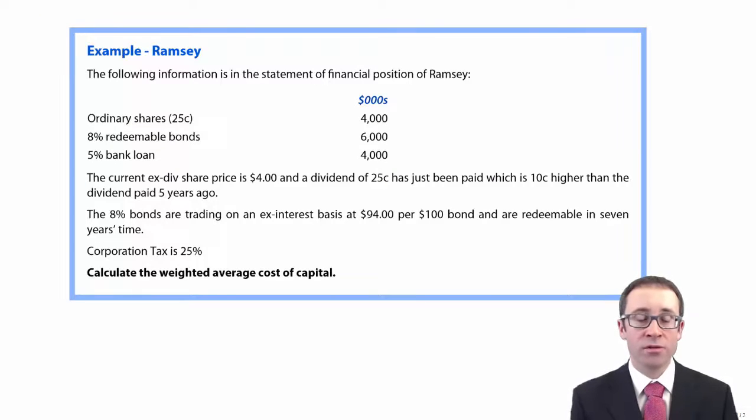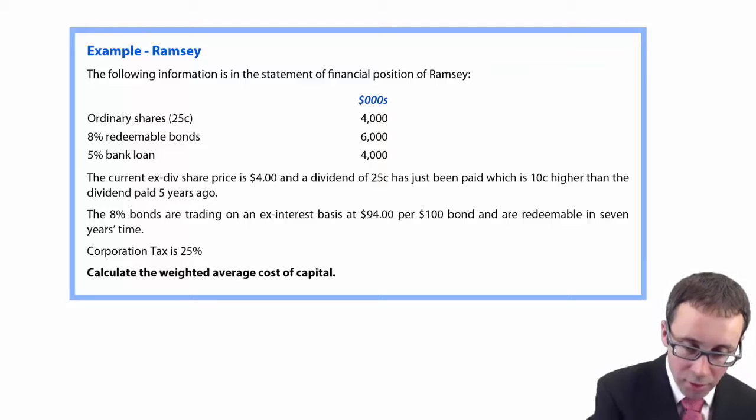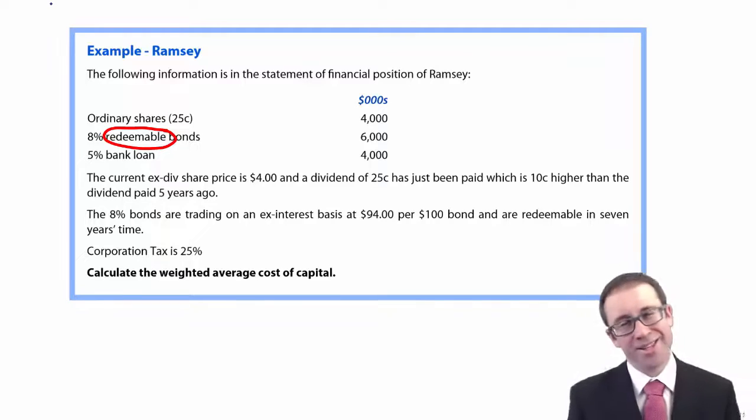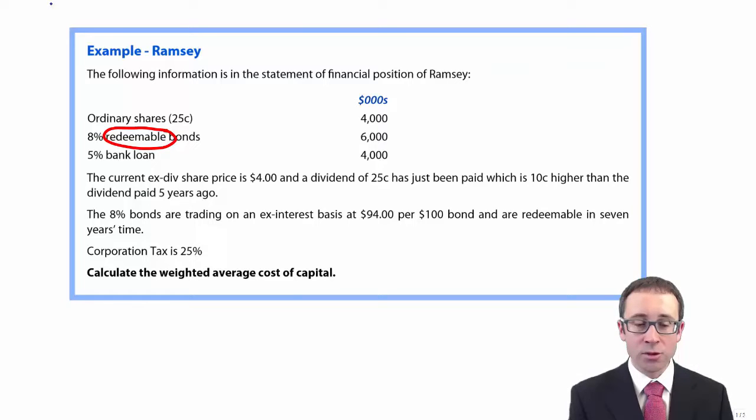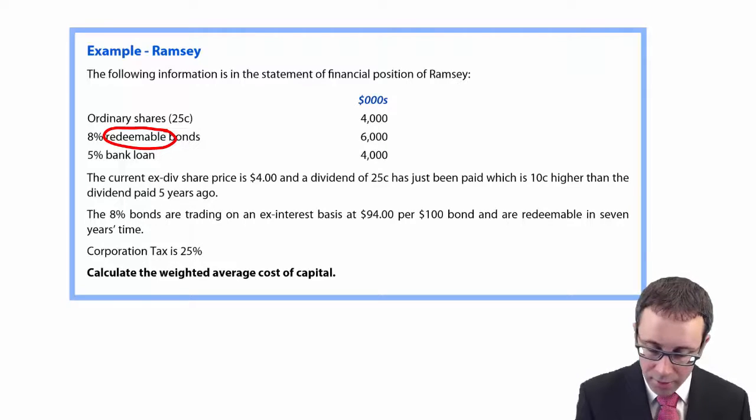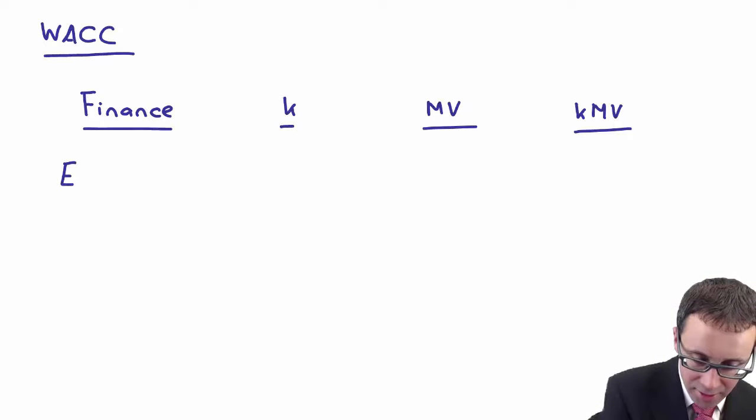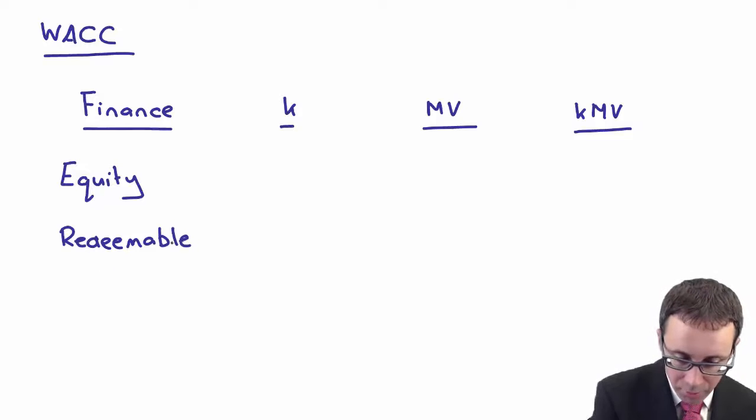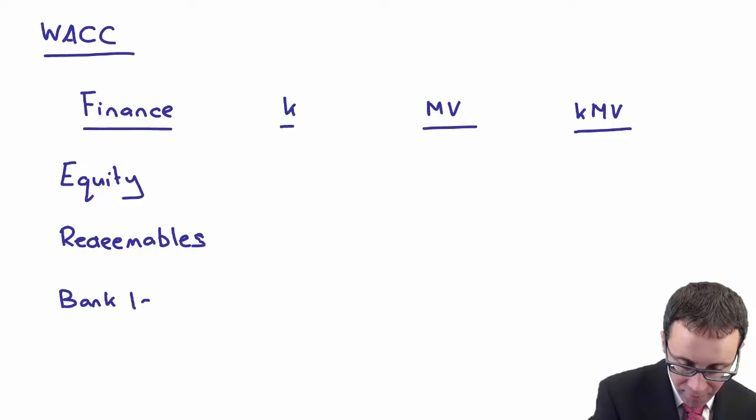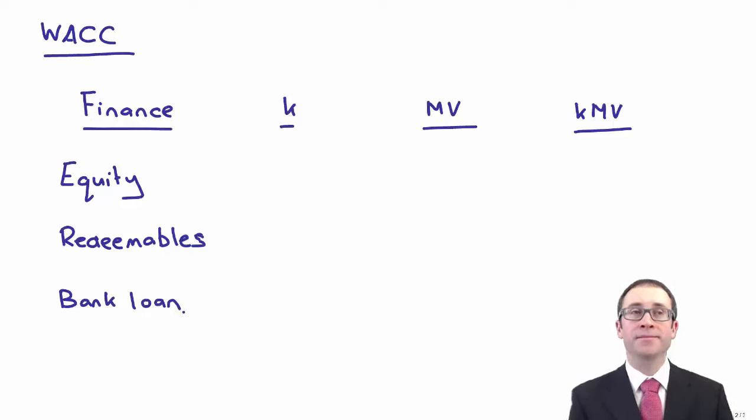Well, here you can see that there are three forms of finance. There are ordinary shares, bonds, but just be careful. Those bonds are redeemable, aren't they? So it's a bit disappointing, sorry. It means we're going to have to do an IRR calculation. But it gives you a good little bit of practice. And there's also a bank loan. So when we're going through and looking at our finance, we have the equity finance, we also have the redeemables, and also we have a bank loan. Excellent.